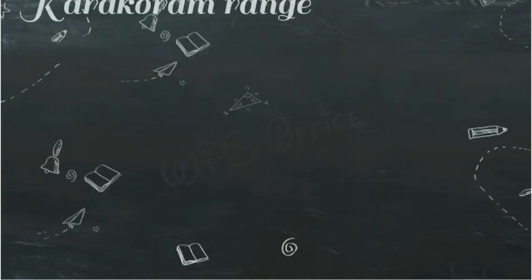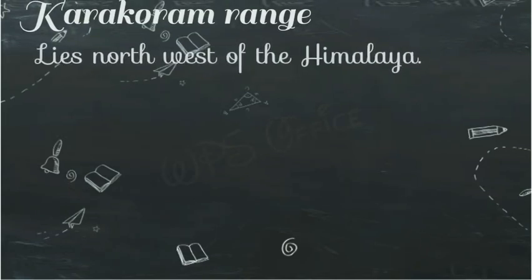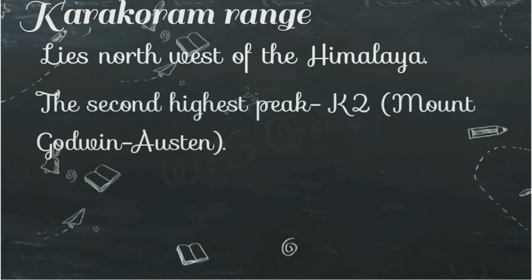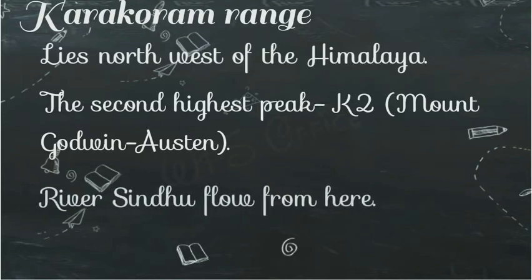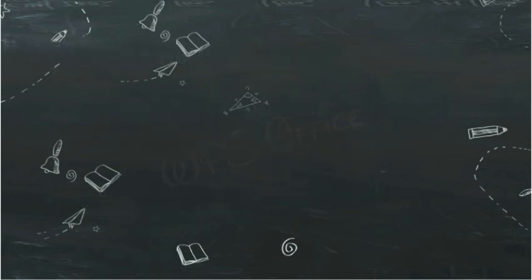And the second range is Karakoram Range. काराकोरम रेंज हिमालयन रेंज के और भी नॉर्थ में है — lies northwest of the Himalayas. And the second highest peak K2, जिसका पूरा नाम Mount Godwin Austin है, इसी काराकोरम रेंज में पड़ता है। And river Sindhu also flows from here — सिंधु नदी भी इस प्रदेश से होकर गुजरती है।